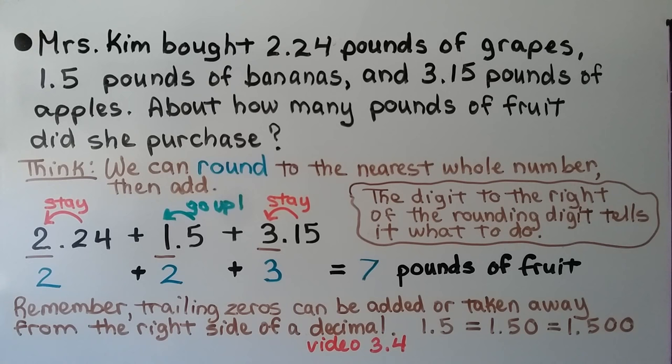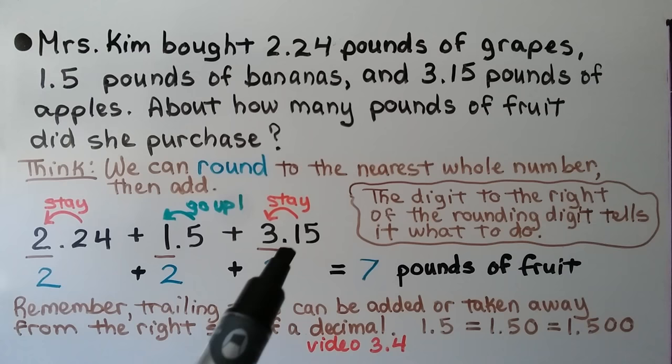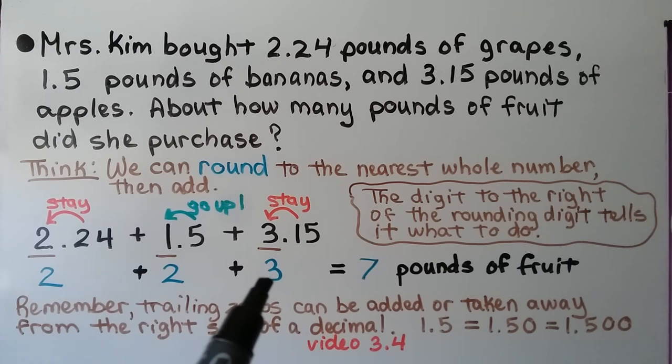Mrs. Kim bought 2 and 24 hundredths pounds of grapes, 1 and 5 tenths pounds of bananas, and 3 and 15 hundredths pounds of apples. How many pounds of fruit did she purchase? We can round to the nearest whole number, then add. 2 stays the same because the digit to the right is 2. The 5 tells the 1 to go up to 2. And the 1 in the tenths place tells the 3 to stay as 3. We add these and get 7 pounds of fruit.